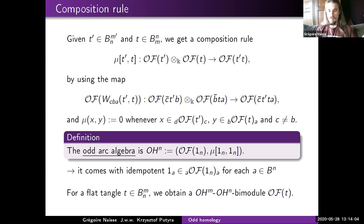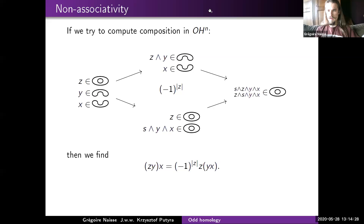Moreover, whenever you have a flat tangle, you can build the corresponding space using this TQFT, and this composition law gives it a bimodule structure over the odd arc algebra, because composing t with the identity tangle preserves the shape of t.